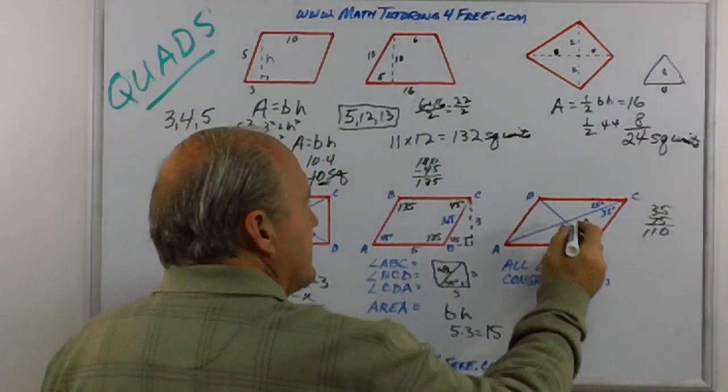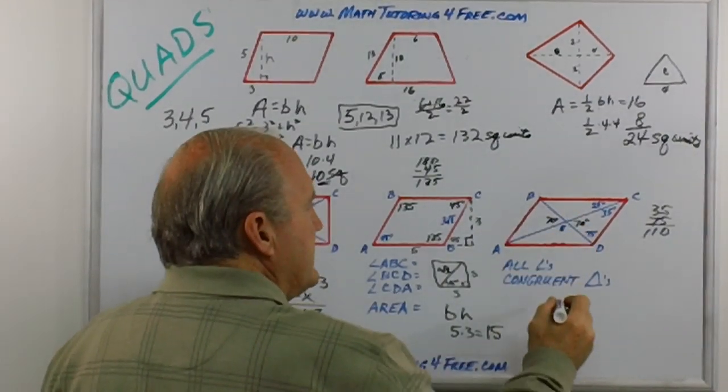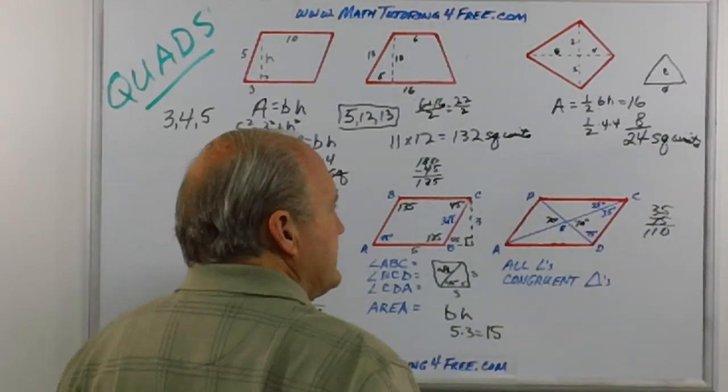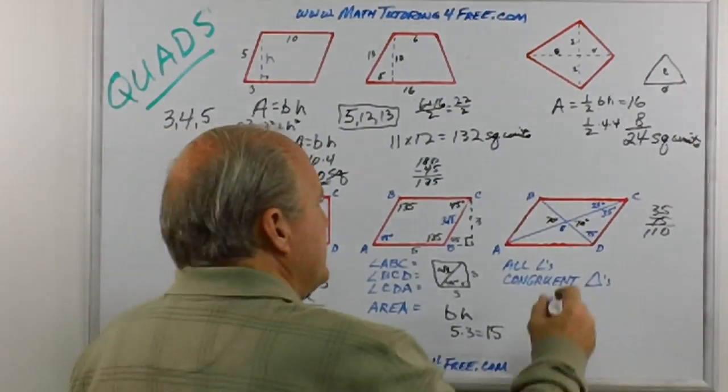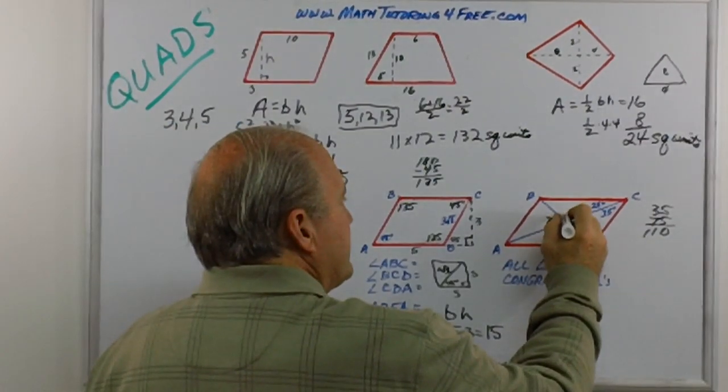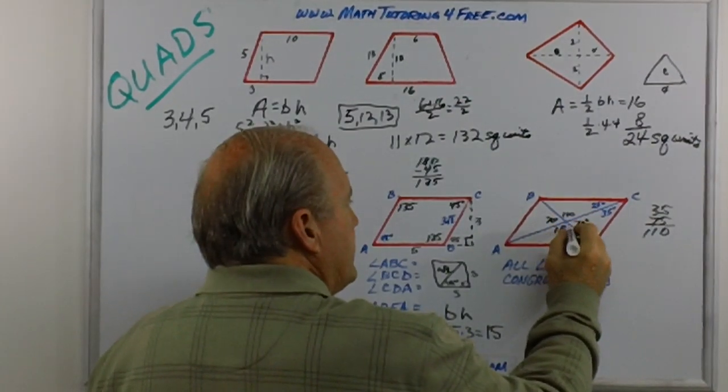Vertical angles are equal, so this would be 70 degrees. Adjacent form a straight line, so this would be 110 degrees, as would down here.